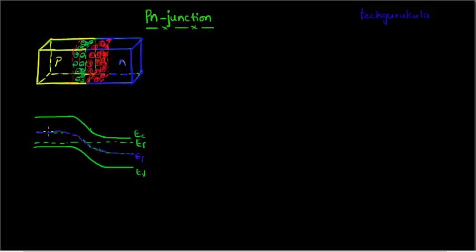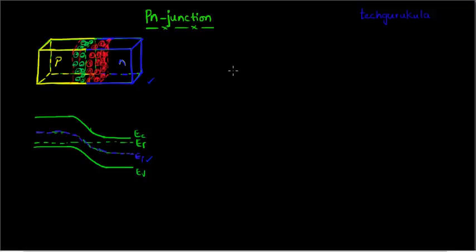We take this PN junction under equilibrium and its corresponding band diagram, just as we saw in the previous video. Here we have added a blue line which is EI, the intrinsic Fermi energy level, added just for reference and calculation purposes. We are going to draw the charge distribution, electric field, and potential difference across the junction.